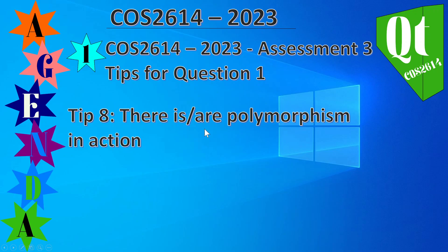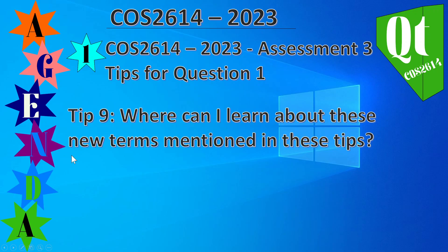Tip eight: there is polymorphism in action. Tip nine: where can you learn about these new terms? As I've said, try and check the UNISA documentation and try and check the textbook.